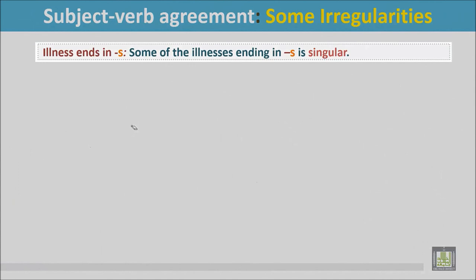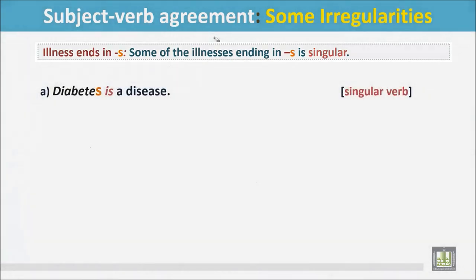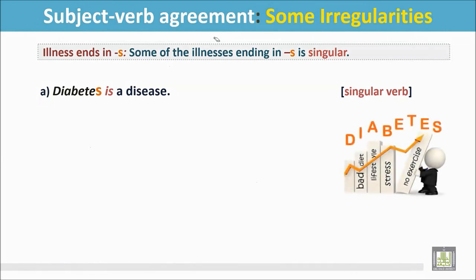Illness names ending in S. Some illnesses ending in S are singular. See the example: Diabetes is a disease. There are many reasons for it. This noun ends in S, but it is a singular noun, so the verb is singular.